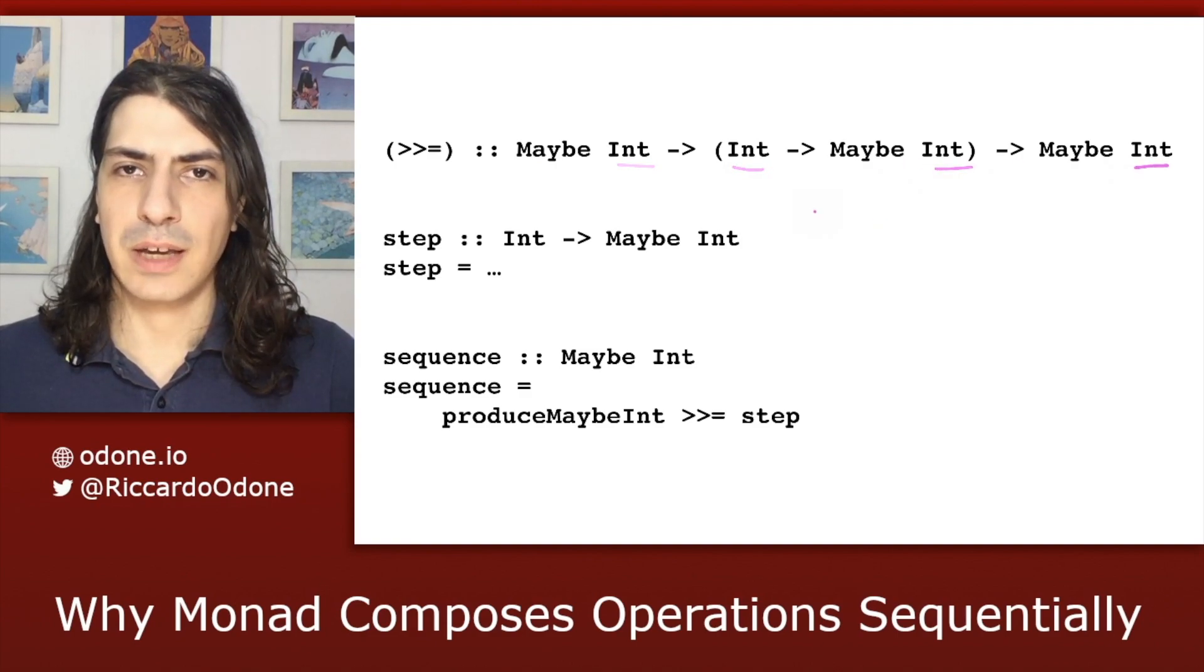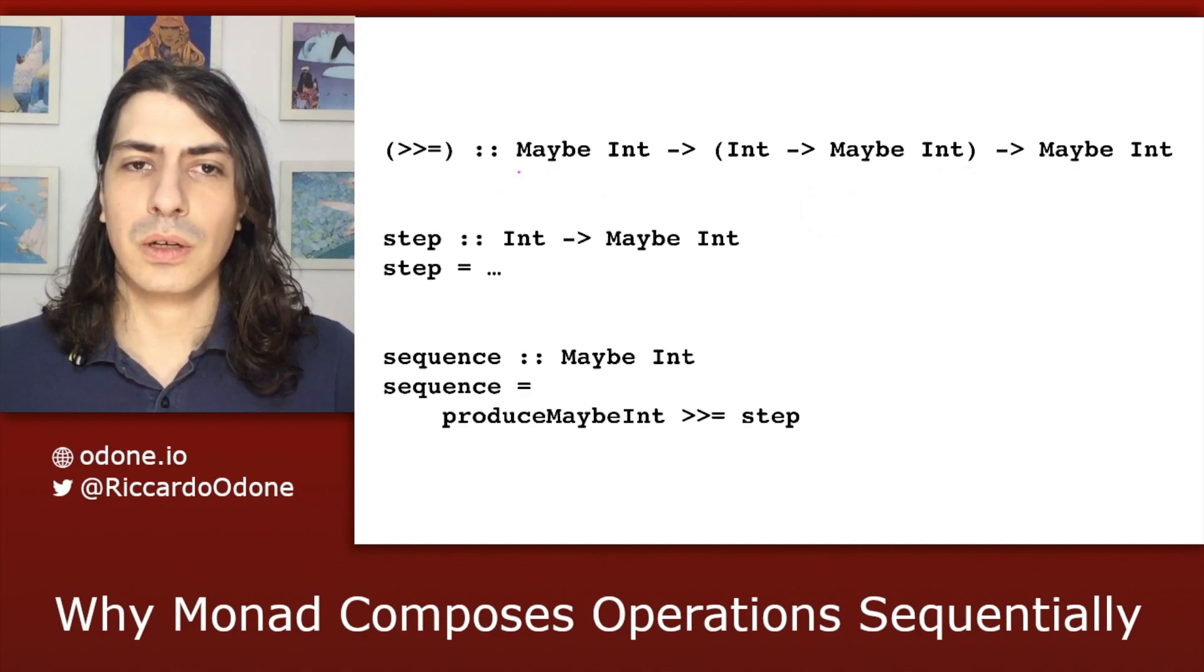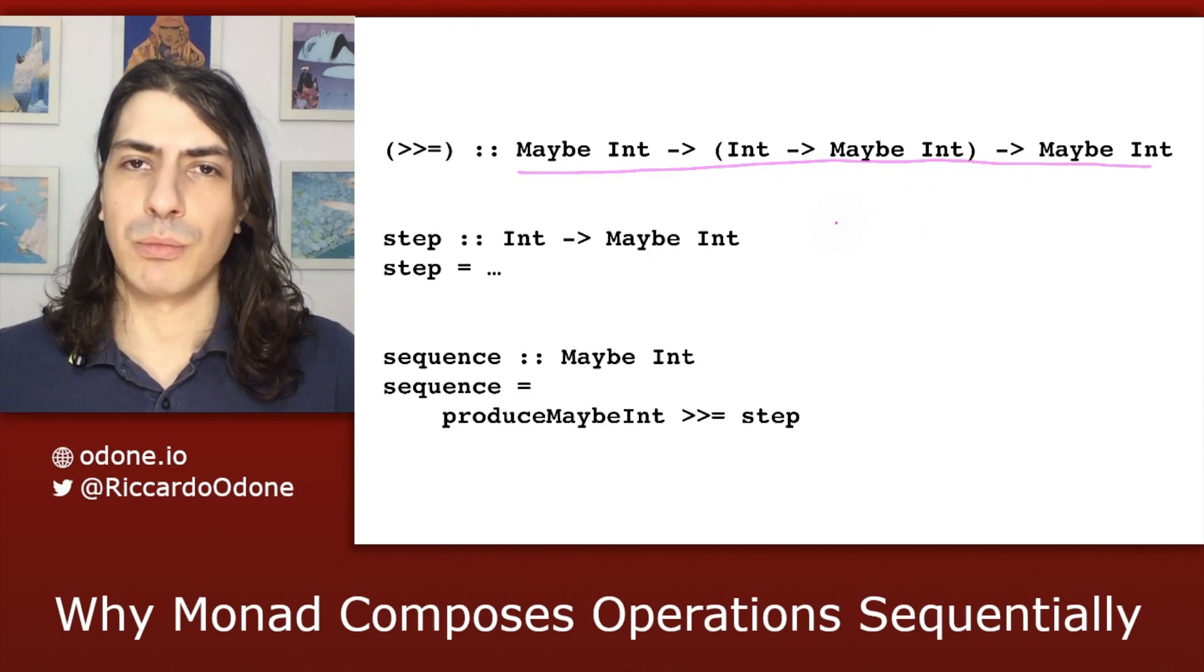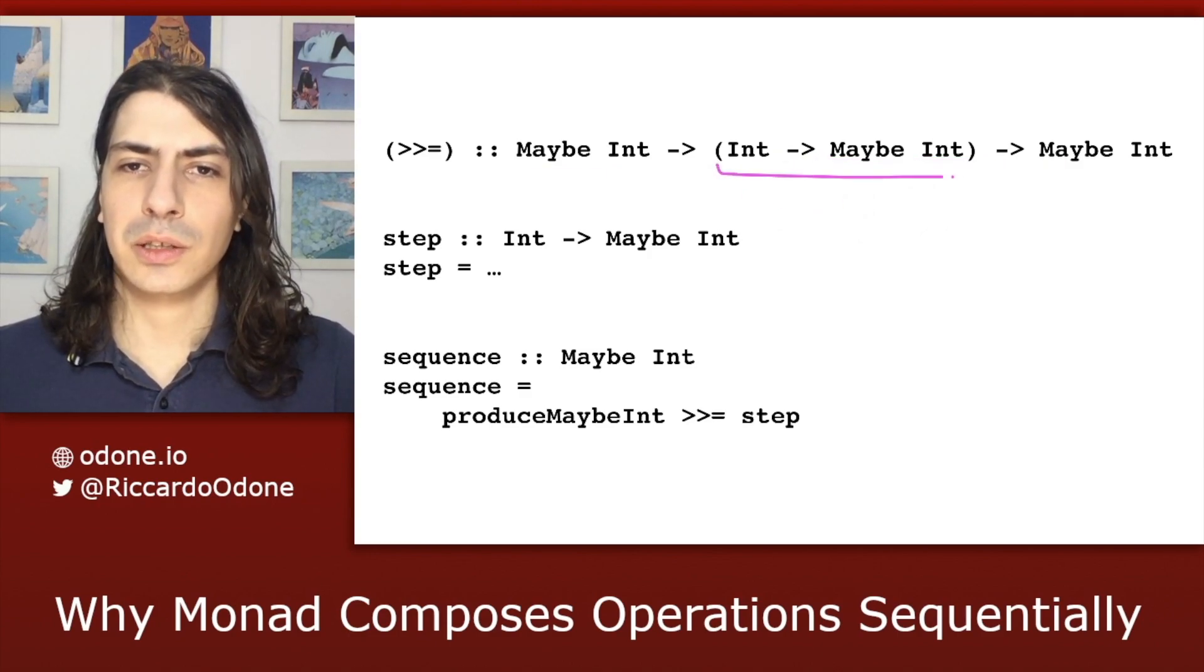So, we do the same for a and b, replacing them with int. This is what comes out, so our type signature is now more concrete. Also, notice that we extracted the step function and gave it a name. It's now called step.